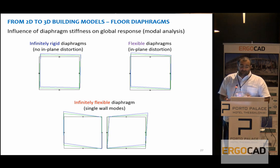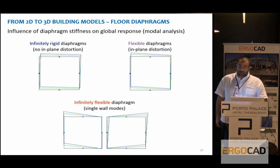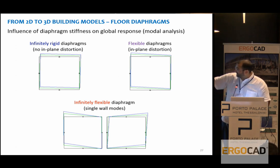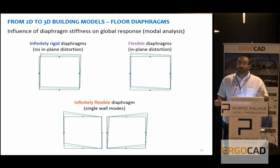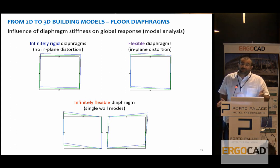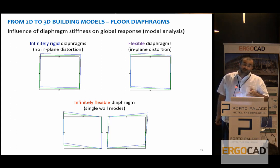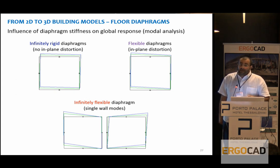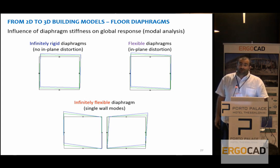If diaphragms are infinitely rigid, they redistribute forces between parallel walls. If they are infinitely flexible, they allow two parallel walls to respond almost independently from each other, and analyses can be carried out individually for each wall. Usually reality is in between — the diaphragm is not completely rigid nor completely flexible, it has its own deformability, so there will be some coupling between the responses of the two walls and some distortion of the diaphragm itself.